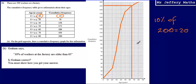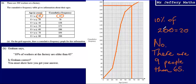So what we can say is that using our graph, is Graham correct? The answer there is no. And the reason why is because we could then say that there are 9 people older than 65, which is less than 20. So final answer, no, there are 9 people older than 65, and that is less than 20.